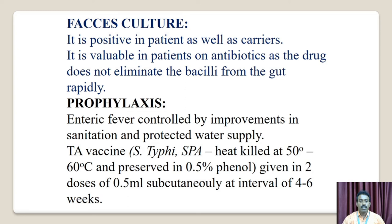Prophylaxis. Enteric fever is controlled by improvements in sanitation and protected water supply. TAB vaccine: Salmonella Typhi and Paratyphi A and B — heat-killed at 50 to 60 degrees Celsius and preserved in 0.5 percent phenol. Given in two doses of 0.5 mL subcutaneously at intervals of four to six weeks.